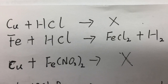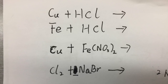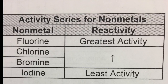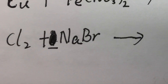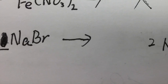For the fourth example, we use the activity series for non-metals — specifically the halogen series. It works exactly the same way as for metals: the halogen with greater activity will replace the one with lower activity. Looking at chlorine and bromine, chlorine has greater activity than bromine, so this reaction will happen.